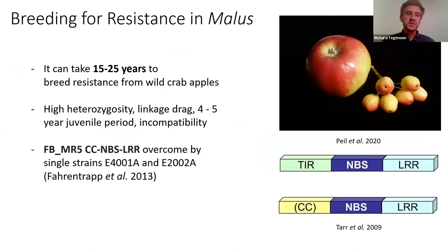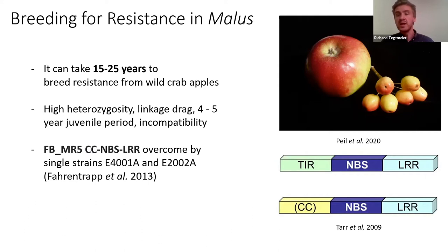Most of the cultivars used in production today are susceptible to fire blight — all the fresh market apples you get in the grocery store — so resistance breeding is in high demand. With tree breeding, that comes with quite a bit of challenges. To introgress resistances from wild species can take up to 15 to 25 years, mainly due to high heterozygosity from being an outcrosser, linkage drag, and a four-to-five year juvenile cycle per round of crossing.